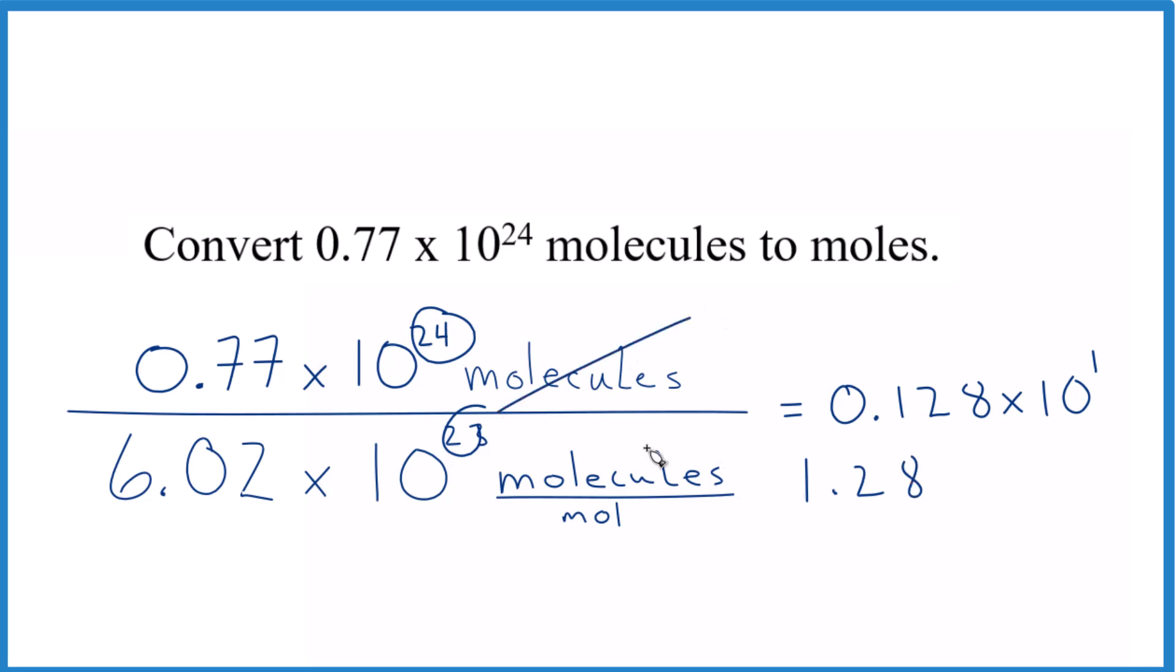And the units, molecules canceled out because they're on the top and the bottom. The units are going to be moles. That's what we're looking for. So we know that we did it correctly because our units worked out. So this is the type of dimensional analysis we did here. That's it.